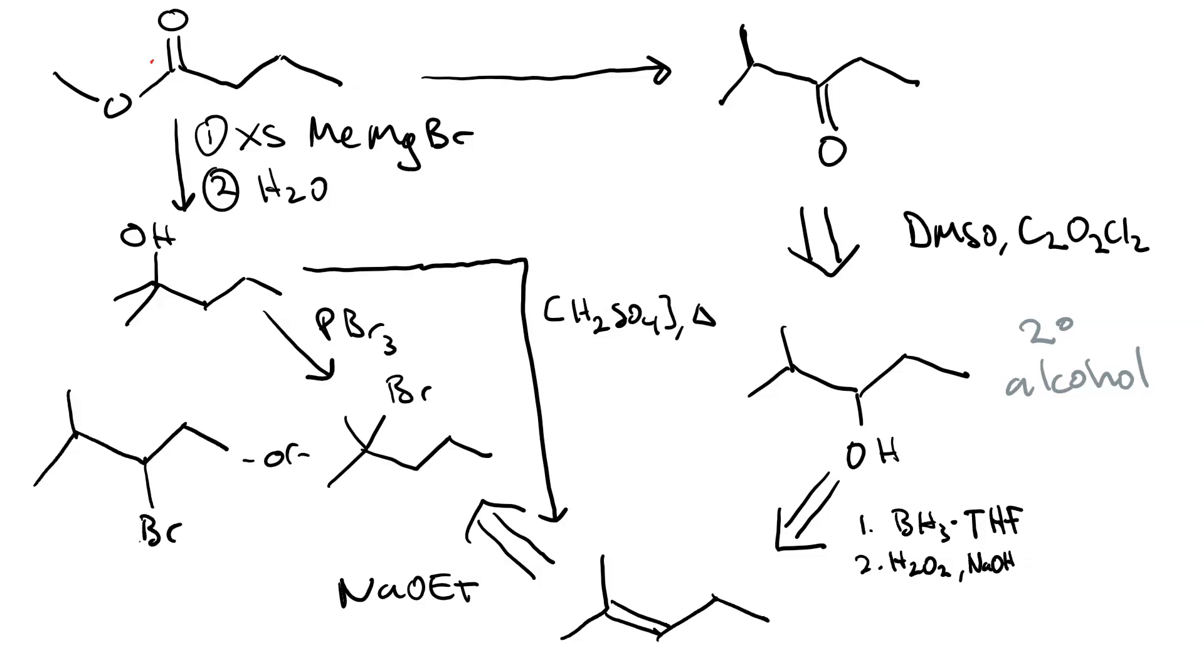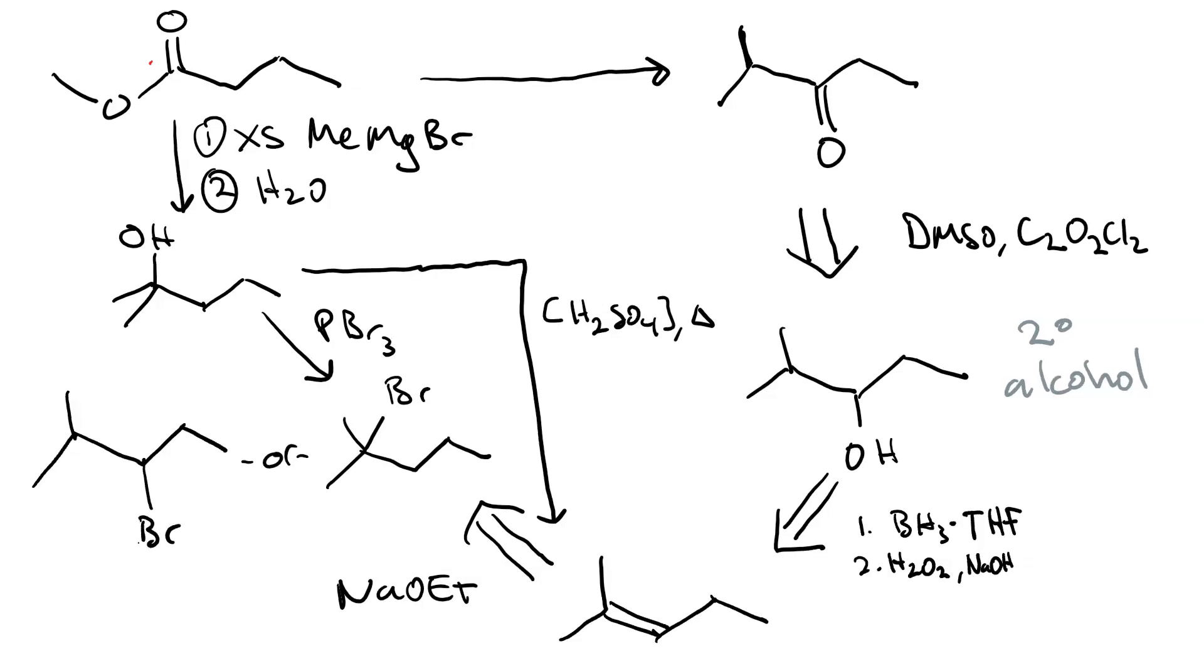So, now let's write this up forwards. First, let me number all my steps. So, 1 is the excess Grignard. 2 is the water. 3 is acid-catalyzed dehydration. 4 is hydroboration. 5 is oxidation. That gives me my anti-Markovnikov hydration product. And 6 is the oxidation. So, that's 6 steps.